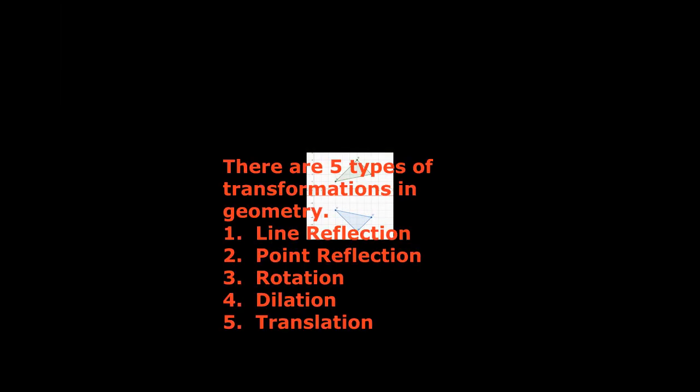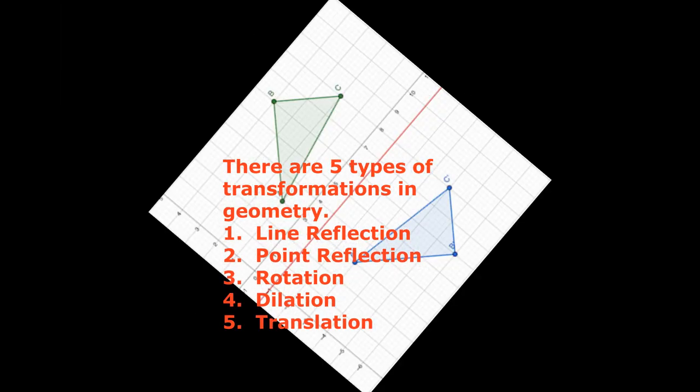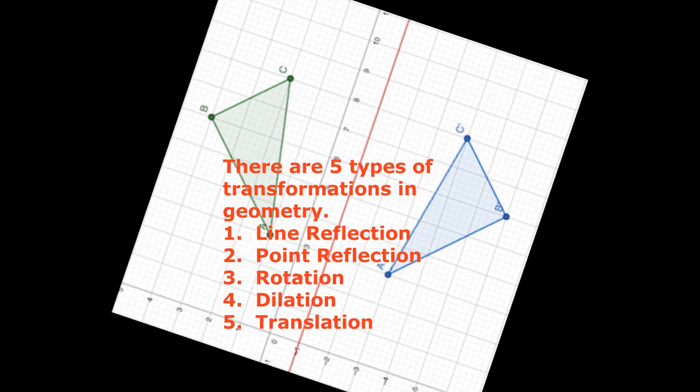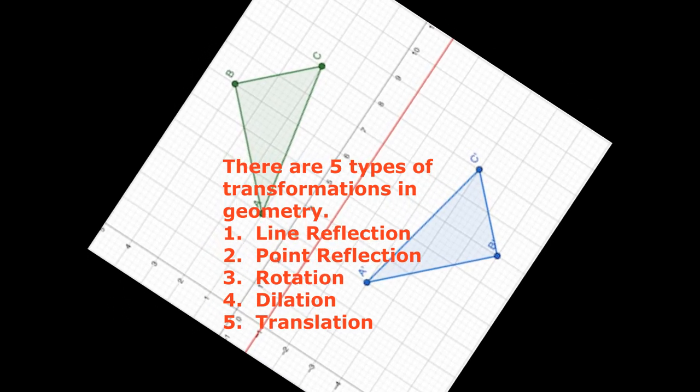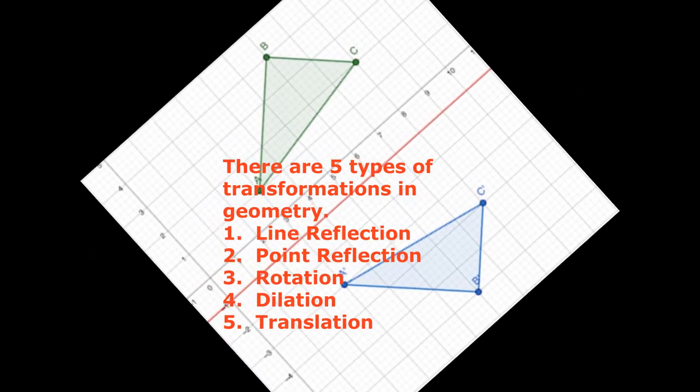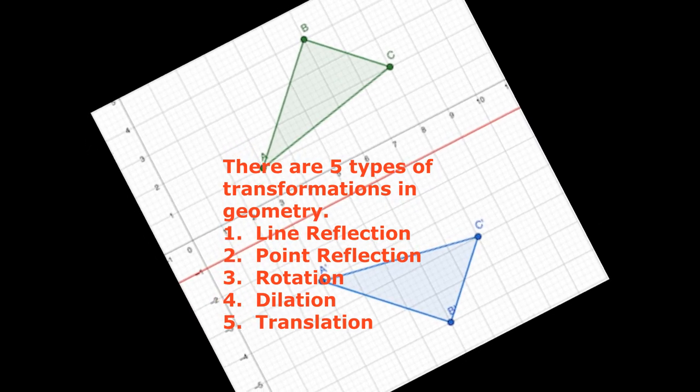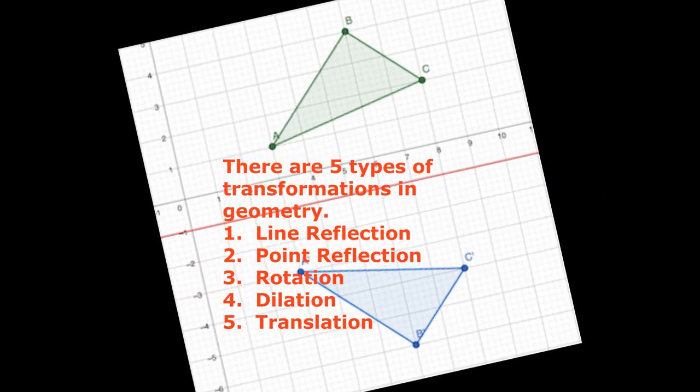There are five types of transformations in geometry. One, line reflections which is folding or flipping an object over a mirror line. Two, point reflections which is a type of reflection that occurs when a figure is built around a single point.